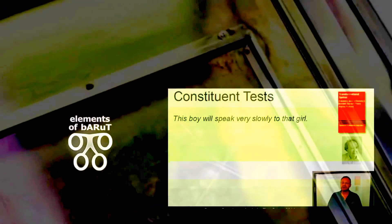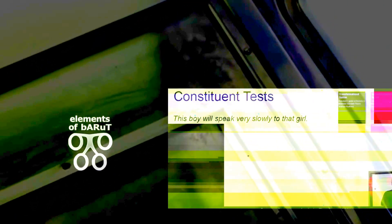We looked at the sentence: 'This boy will speak very slowly to that girl.' A sentence taken from Andrew Radford's 1977 book, Transformational Syntax. And we decided that, for example, 'very slowly' is a constituent.